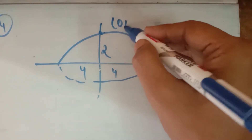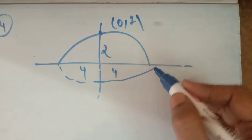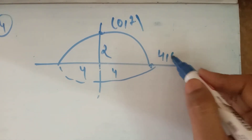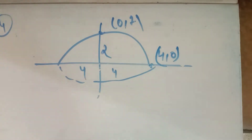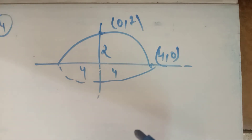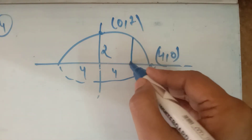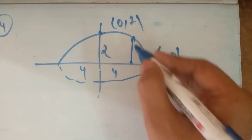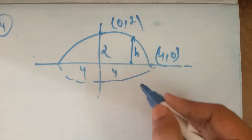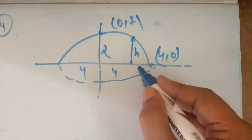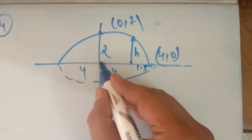तो हमें यह point पता चल गया: (4, 0) and (−4, 0), and the top point is (0, 2). You have to find the height of the arc 1.5 meters from one end — one end से height of arc पता लगाना है, जिसको h मान लिया।